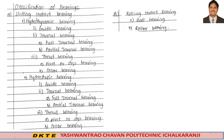The second major classification is rolling contact bearing. Rolling contact bearing also has two types: ball bearing and roller bearing. Both ball bearing and roller bearing are further subdivided into their own types.